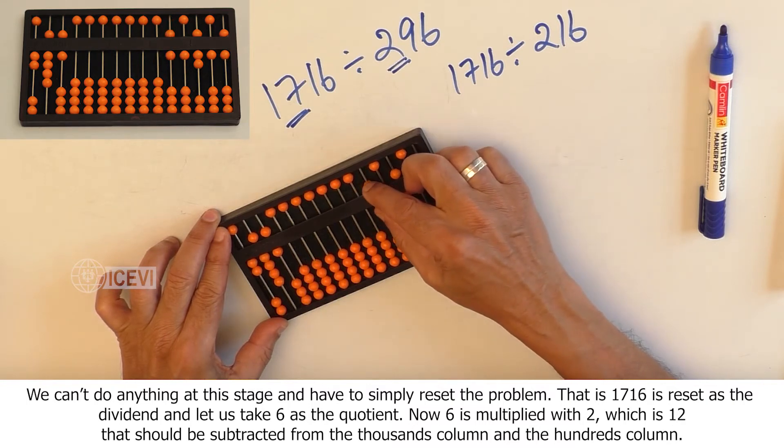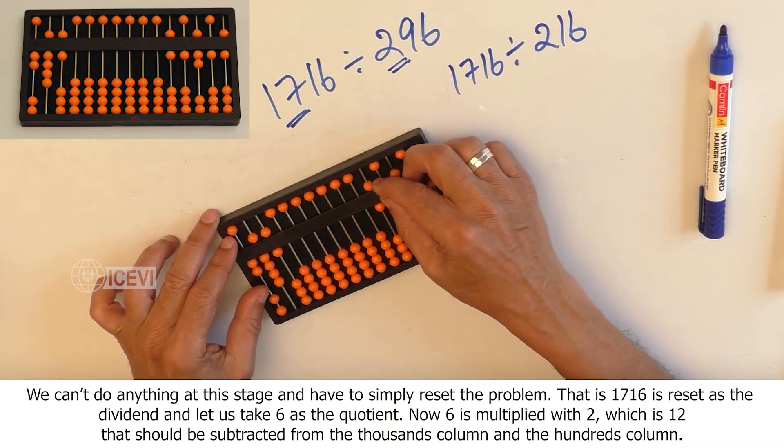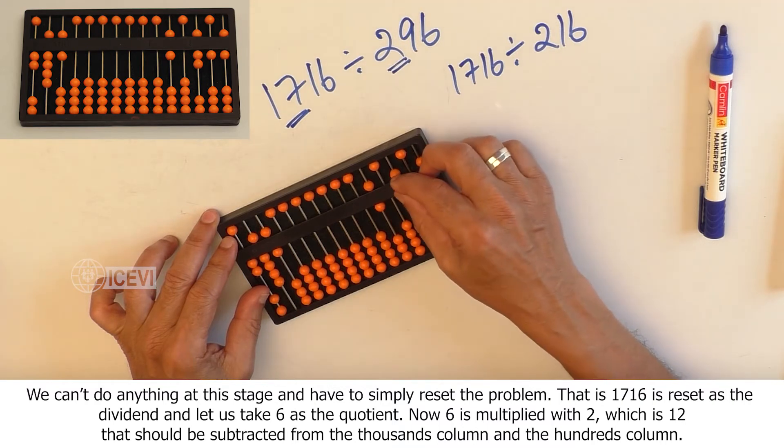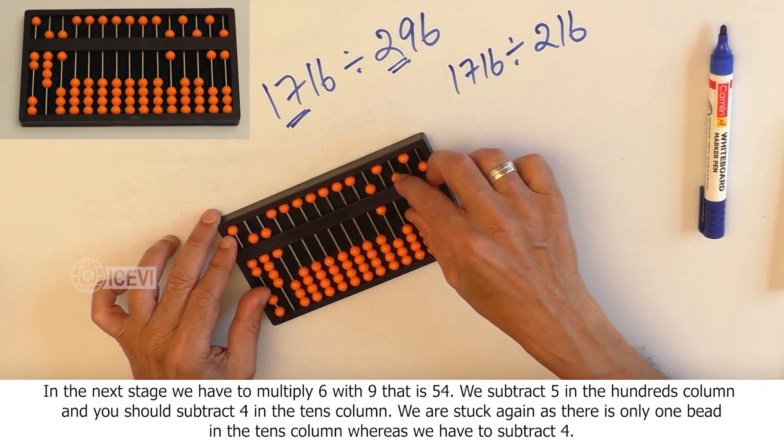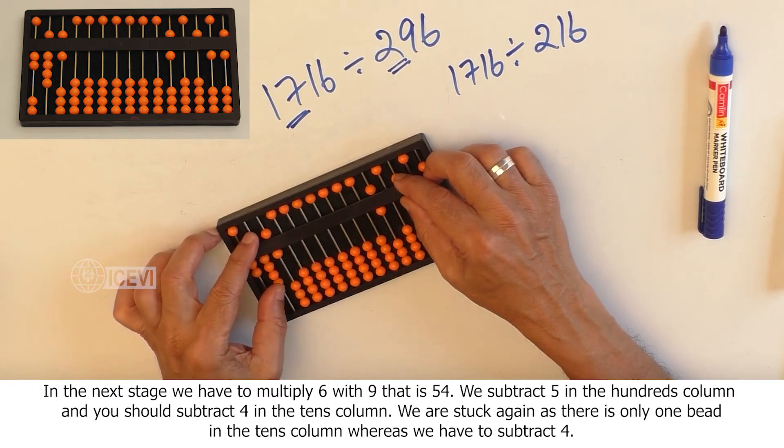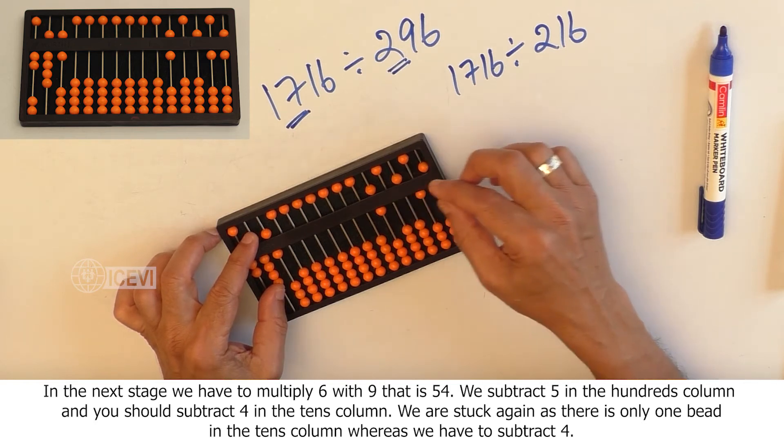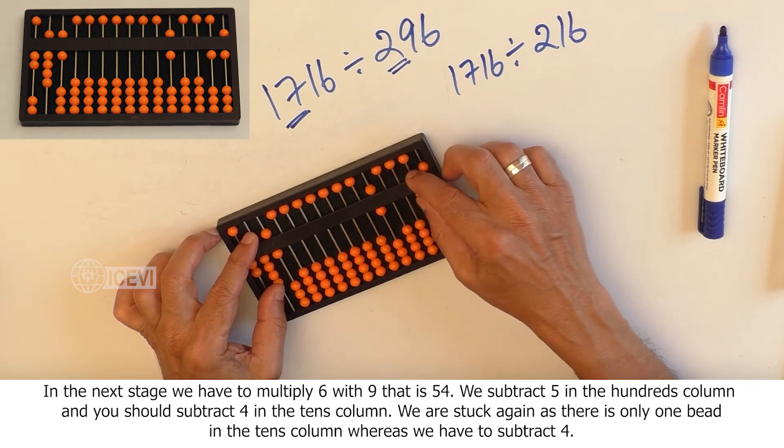Now, 6 is multiplied with 2, which is 12, that should be subtracted from the thousands column and the hundreds column. In the next stage, we multiply 6 with 9, that is 54. We subtract 5 in the hundreds column and should subtract 4 in the tens column. We are stuck again, as there is only one bead in the tens column, whereas we have to subtract 4.